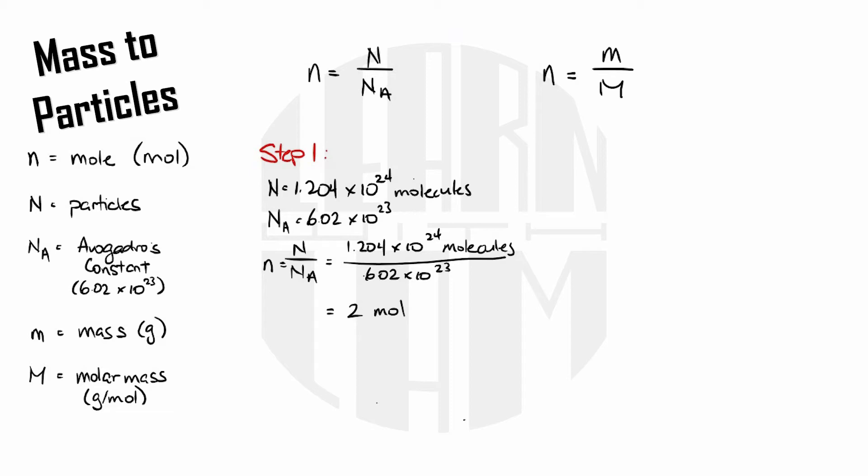Now that's all well and good but I'm not actually looking for moles so I need to do a second step. If I'm looking for mass then my equation is mass equals moles times molar mass so I have 2 moles of carbon dioxide from step 1 and the molar mass of carbon dioxide is 44.01 grams per mole. There is a separate video for finding molar mass if you need some extra help with that. In the end that gives me 88.02 grams of carbon dioxide.